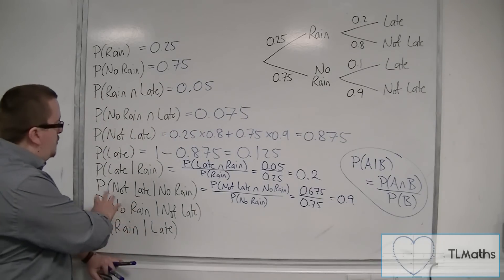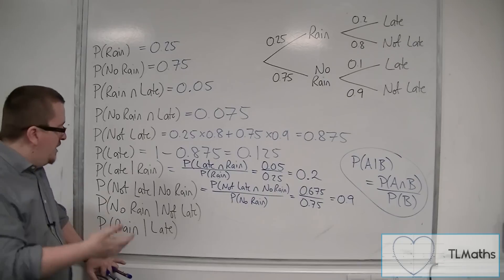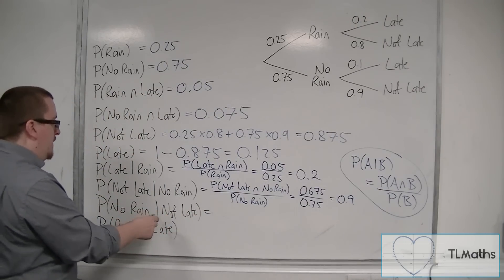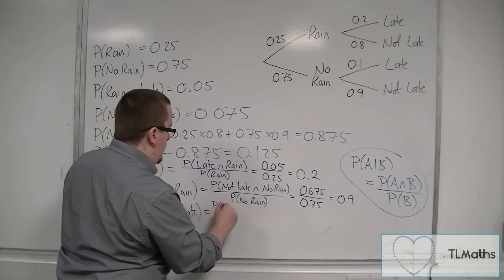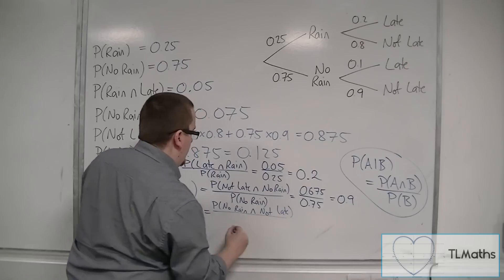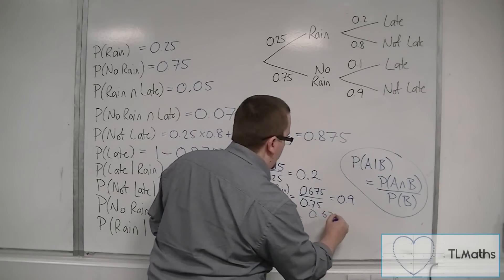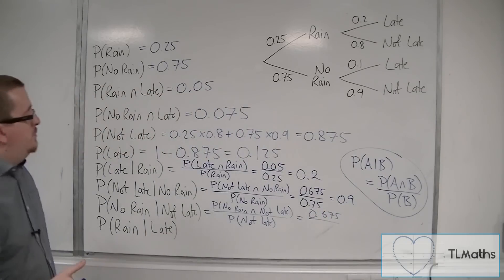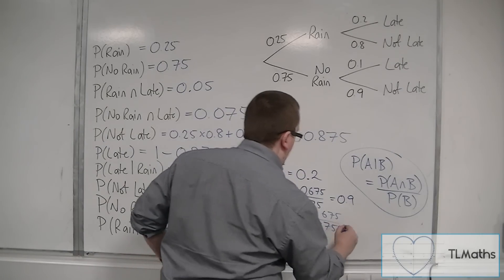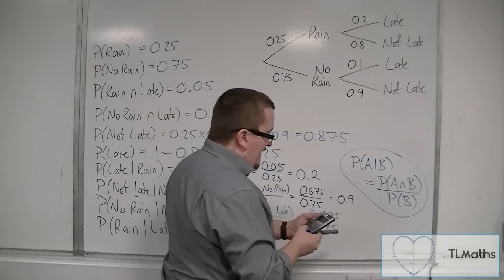Now, if we want the probability of no rain given that he was not late, that's a little bit more difficult to do straight off, so we've got to use the formula in this case. We've got the probability of no rain and not late, which we worked out as 0.675, divided by the probability of not late. So 0.675 divided by 0.875 gives us 27 over 35.